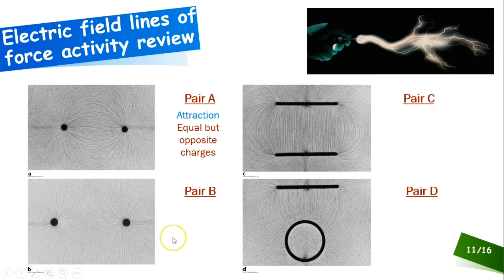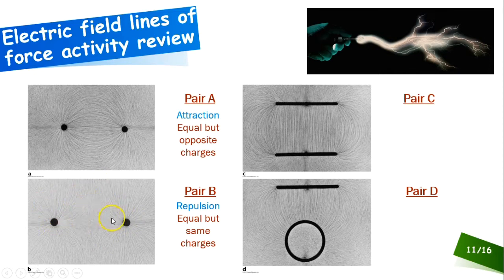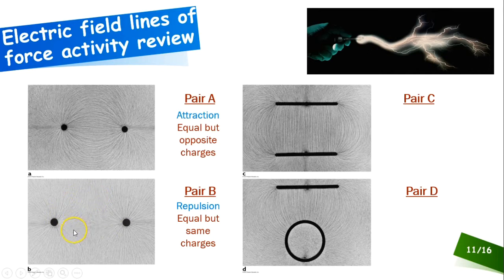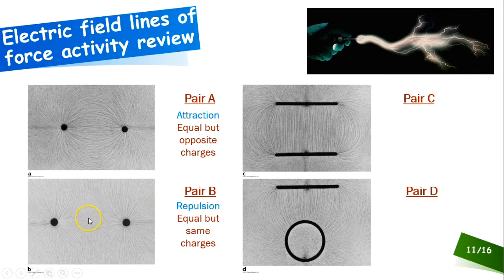For pair B, we see the opposite — repulsion. The lines coming out don't connect the two conductors; they push away from each other. Again, drawing a center line reveals a symmetric pattern, confirming equal charges. But because they're repelling, we know they're the same type of charge, not opposite.